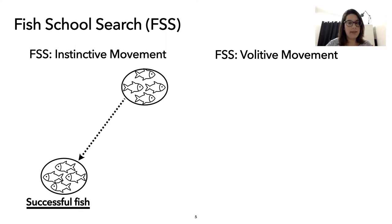The first one is the instinctive, in which the swarm is influenced only by the successful fish in the current iteration. Successful here means that the current fitness value is better than the previous one in the last iteration.